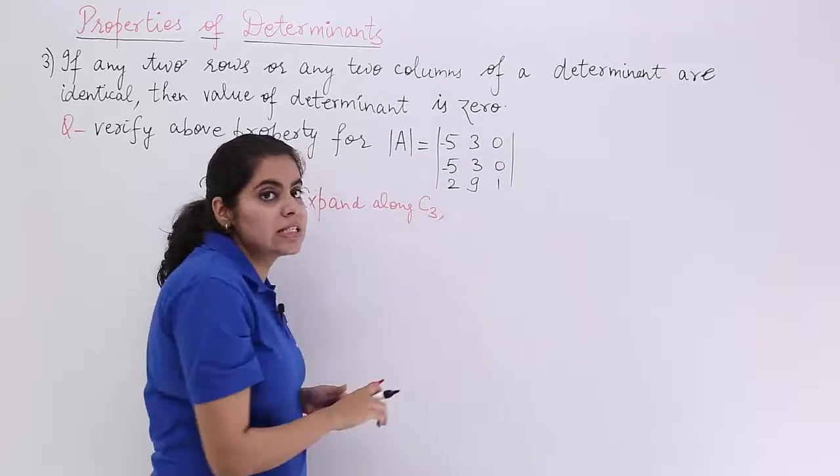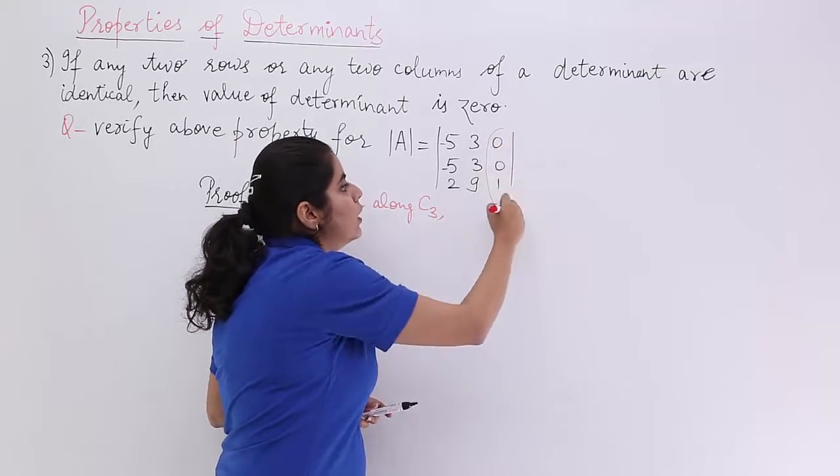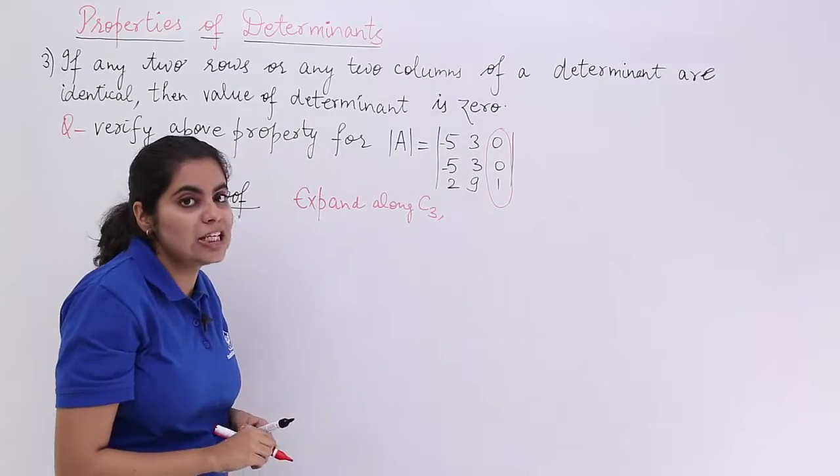You see here, right? So what is column 3? Which is column 3? This is your column 3. It has 0, 0, 1.